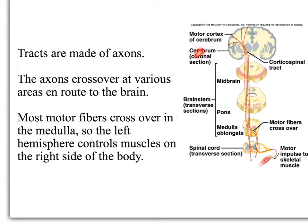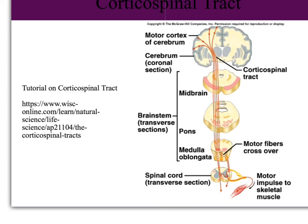Looking at this picture, here's our motor cortex on the right side of the body, and the motor impulse is traveling down through the brain stem — through the midbrain, the pons — and then in the medulla, we see those tracts crossing over and moving to the left side of the cord, so they end up controlling muscles on the left side of the body. The corticospinal tract is the main motor tract from the motor cortex of your brain, and those motor impulses do cross over as they pass through the medulla.